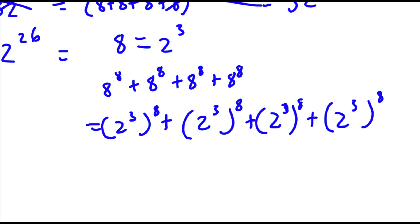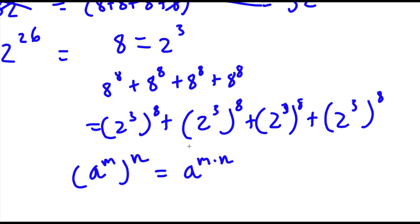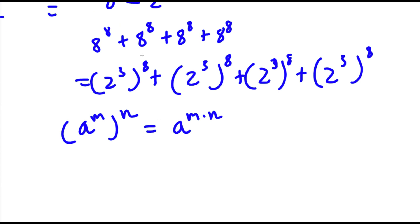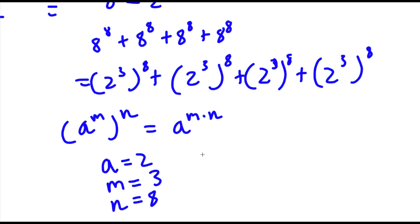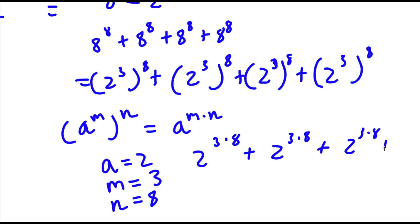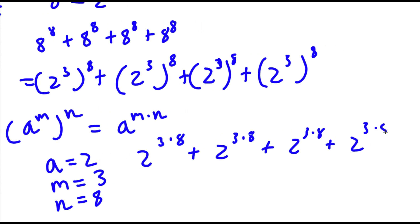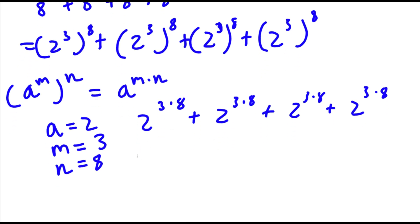Now if I have something in the form a to the power of m to the power of n, this is equal to a to the power of m times n. So in this case, a is equal to 2, m is equal to 3, and n is equal to 8. So now I have 2 to the power of 3 times 8, four times. Now 3 times 8 is the same thing as 24.